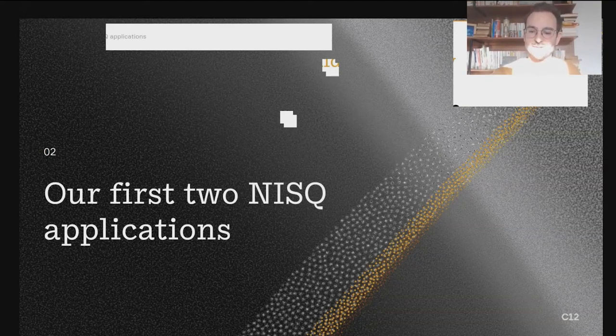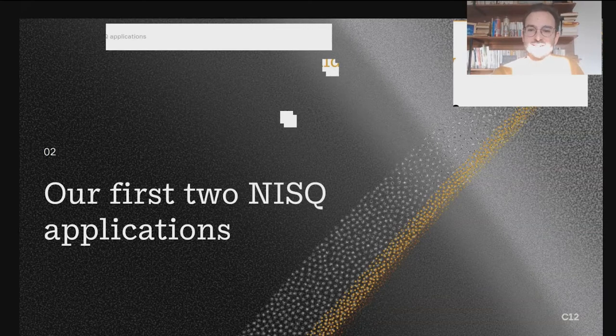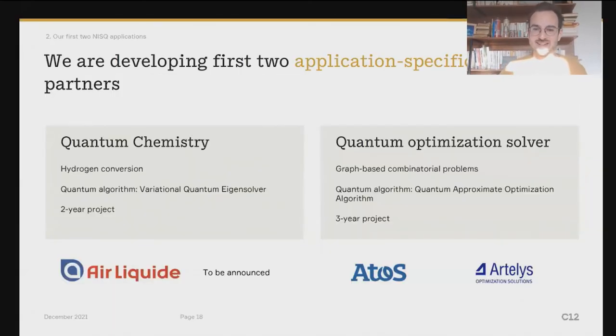Okay, now it's time to share with you the two applications that we are working on. So the first one is quantum chemistry. We have a project with Air Liquide working on hydrogen conversion. When you liquefy hydrogen and store it in a tank, if it's in the natural form, you lose 20% of its volume within 44 hours. So there's a very important step before liquefaction that is the conversion of natural hydrogen. And we think that we have a solution to identify the right catalyst for this step using our quantum computer.